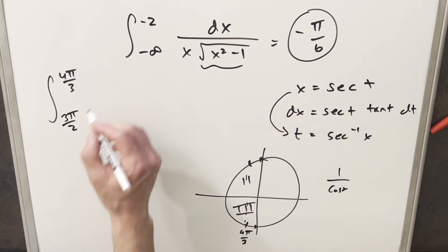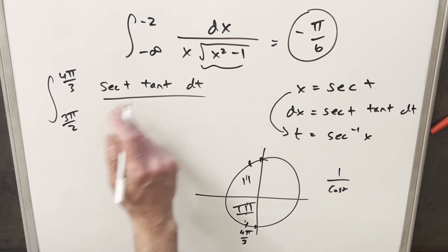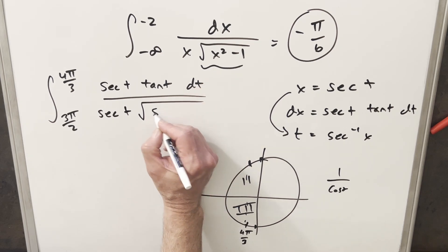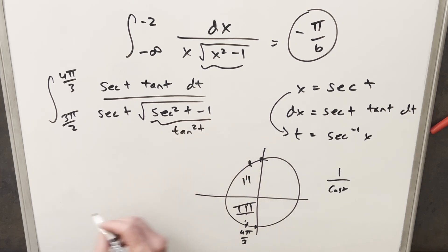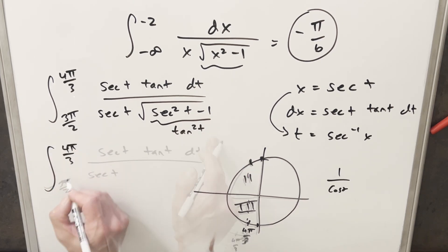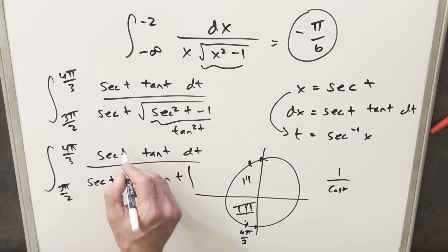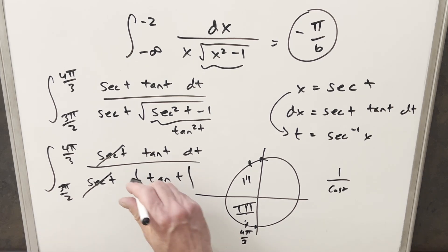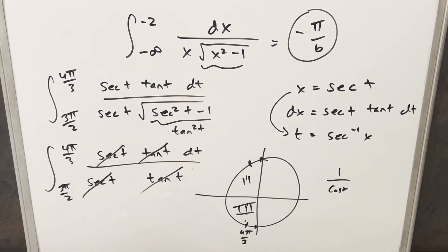Substituting everything: the numerator is dx = secant(t) tan(t) dt, the x in the denominator is secant(t), and x squared minus one becomes secant squared t minus one, which equals tan squared of t by the Pythagorean identity. Taking the square root gives the absolute value of tan(t). The secants cancel. Since we're in the third quadrant where tangent is always positive, we can drop the absolute value, and then tangent cancels with tangent, leaving us just integrating one.